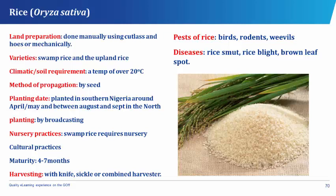The cultural practices of rice are supply and thinning where applicable, fertilizer application, weeding, and pest and disease control. Rice matures in 4–7 months depending on its variety. When harvesting rice, heads of rice are cut off with knife, sickle, or combined harvester.